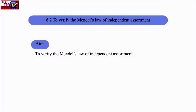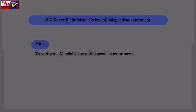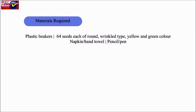To verify Mendel's law of independent assortment. Materials required: Plastic beakers, 64 seeds each of round, wrinkled type, yellow and green color, Napkin or hand towel, Pencil or pen.